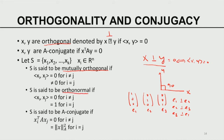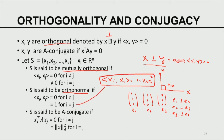A set is orthonormal if for any two distinct vectors the inner product is 0, and the inner product of a vector with itself equals 1 — meaning the vectors are normalized and orthogonal. The unit vectors e1, e2, e3 are not only mutually orthogonal but also orthonormal. A set is A-conjugate if x_i transpose A x_j equals 0 when i is not equal to j, and equals the energy norm squared of x_i with respect to A when i equals j.